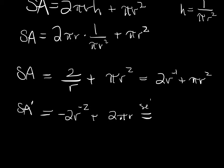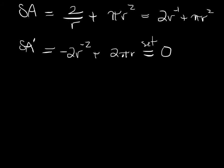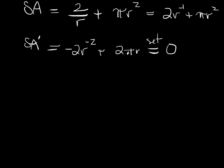We set that equal to 0. What happens next is 2πr equals 2 over r². r³ is 1 over π.